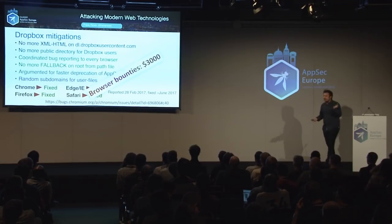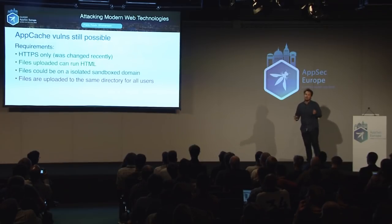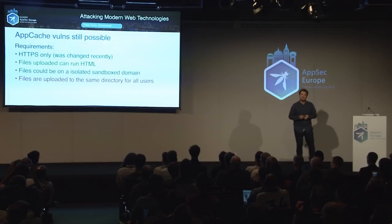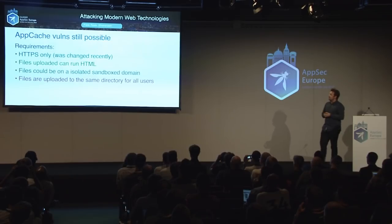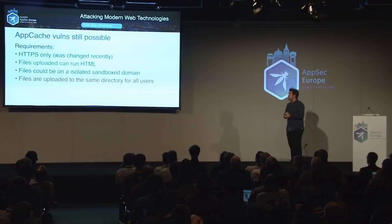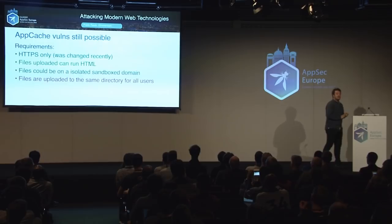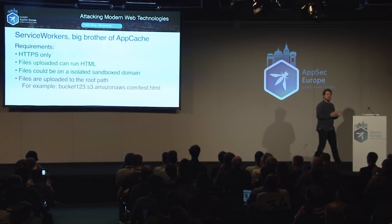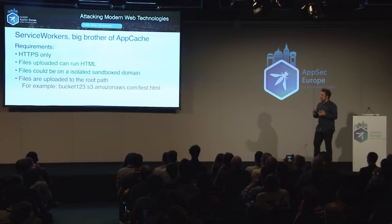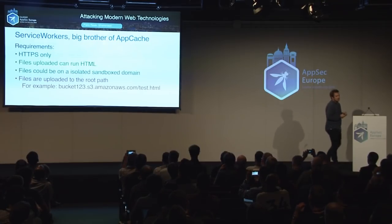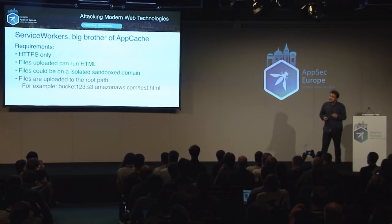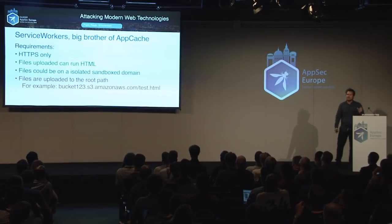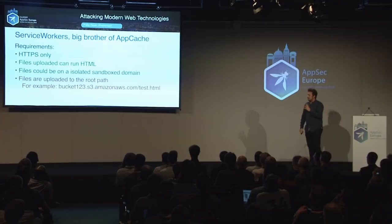The cool thing is the mitigation only addressed the fallback path escaping to root — app cache worms are still possible. They added HTTPS-only as a mitigation, but that doesn't really matter here. If you have files uploaded that can run HTML on an isolated sandbox domain — same setup as Dropbox — and files are uploaded in the same directory for all users, you can still use this. And also the big brother of this: service workers work the exact same way. If you have a bucket with files for different users in the same path on an isolated domain, someone can install app cache or sometimes service workers there.